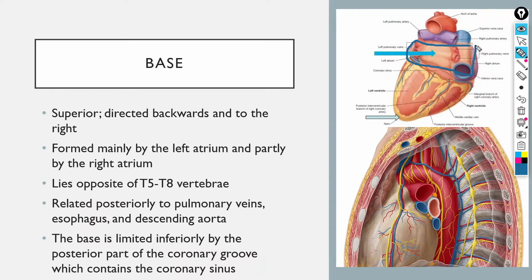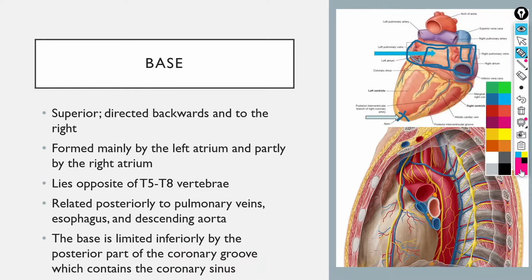You can also auscultate for the mitral valve here. Moving on to the base: it is a rectangular structure found on the posterior end, more superior, whereas the apex is inferiorly. It is formed mainly by the left atrium, with a small part formed by the right atrium. On the back side, we have the vertebral column — specifically the T5 to T8 vertebrae — and posteriorly related to the base we have the pulmonary veins.